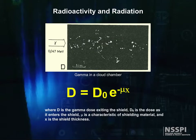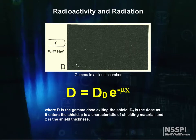In math, D equals D₀ e to the minus μx, where D is the gamma dose exiting the shield, D₀ is the dose as it enters the shield, μ is a characteristic of the shielding material, and x is the shield thickness. There's a reason this looks very much like the half-life decay equations.